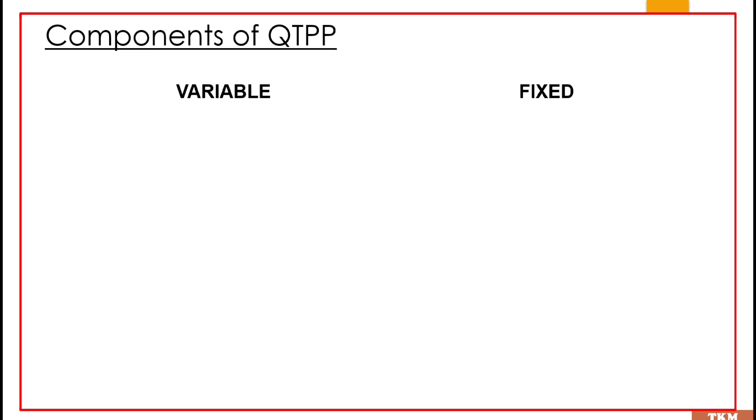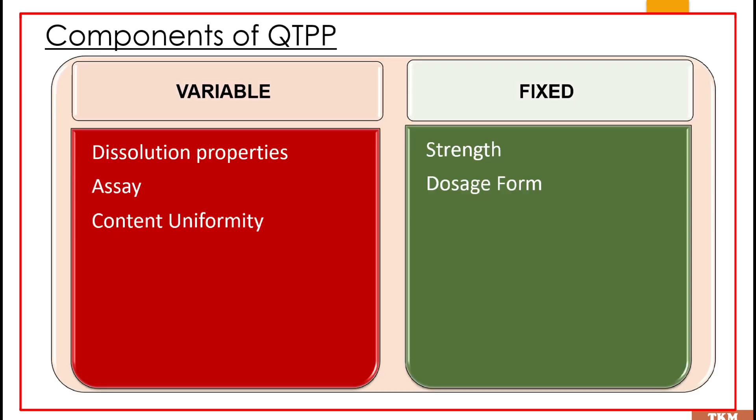The components of QTPP are again subdivided into variable and fixed. Variable elements may have a range of acceptable values — for example, dissolution properties, assay, and content uniformity — because these elements vary based upon other factors. Whereas strength and dosage form are fixed factors; the strength and dosage form are not going to change.